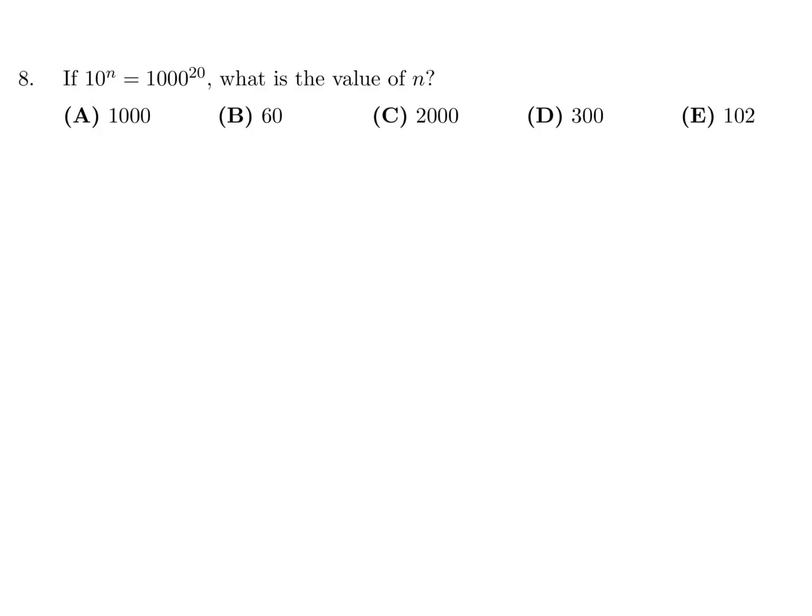If 10 to the power of n is 1,000 to the power of 20, what is n? So 10 to the power of n, 1,000 to the power of 20. 1,000 is 10 to the power of 3, all to the 20. And therefore, that's 10 to the power of 60, and therefore n is 60. Number 8, the answer is B.